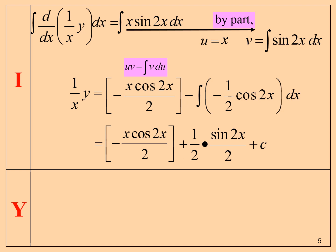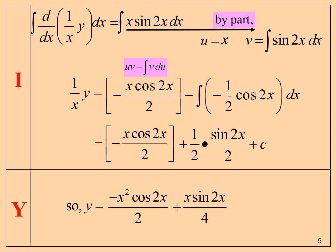And lastly, find y. So y equal negative x squared cos 2x over 2 plus x sine 2x over 4 plus cx.